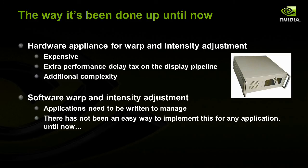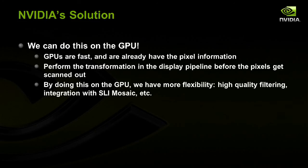Some people use a software-only solution, but the downside is that it's typically application-specific — written for a particular application and probably full-screen only. What's new is that NVIDIA is offering a new way to do this on the GPU through our NVAPI control API to do both warping and intensity adjustment. The GPUs are fast, they already have the pixel information, and in our display pipeline we can add this transformation and intensity map adjustment to get the warp and blend effect.